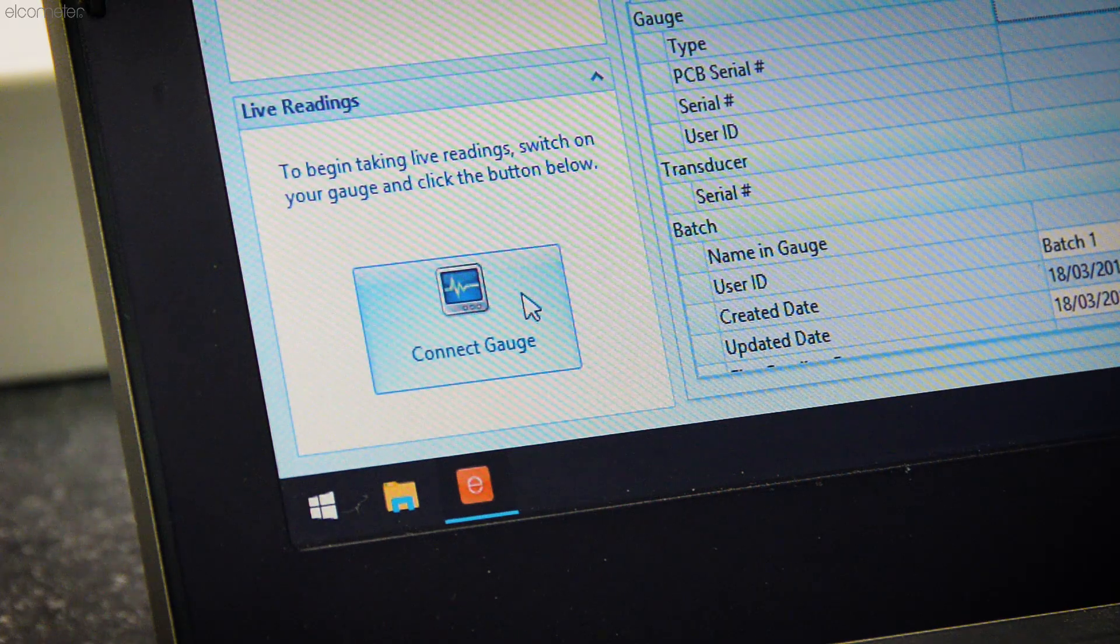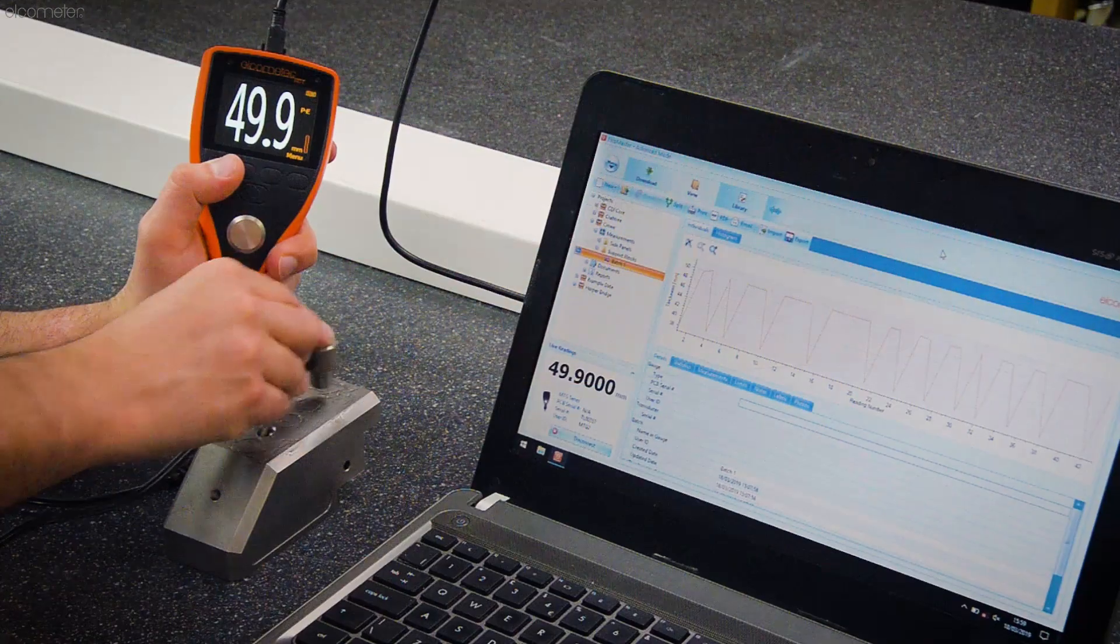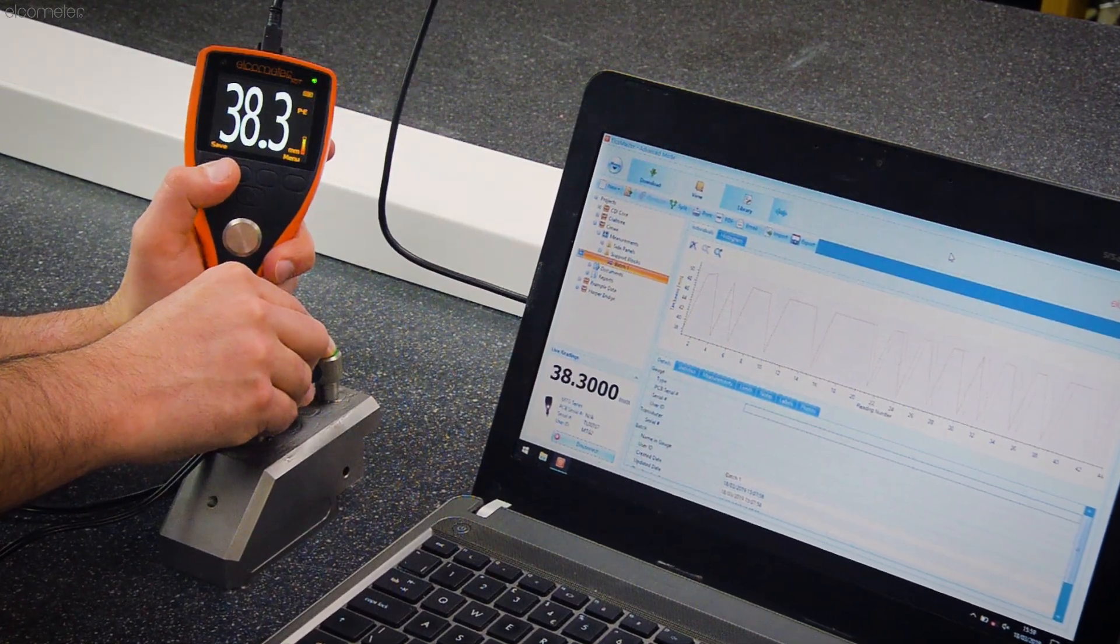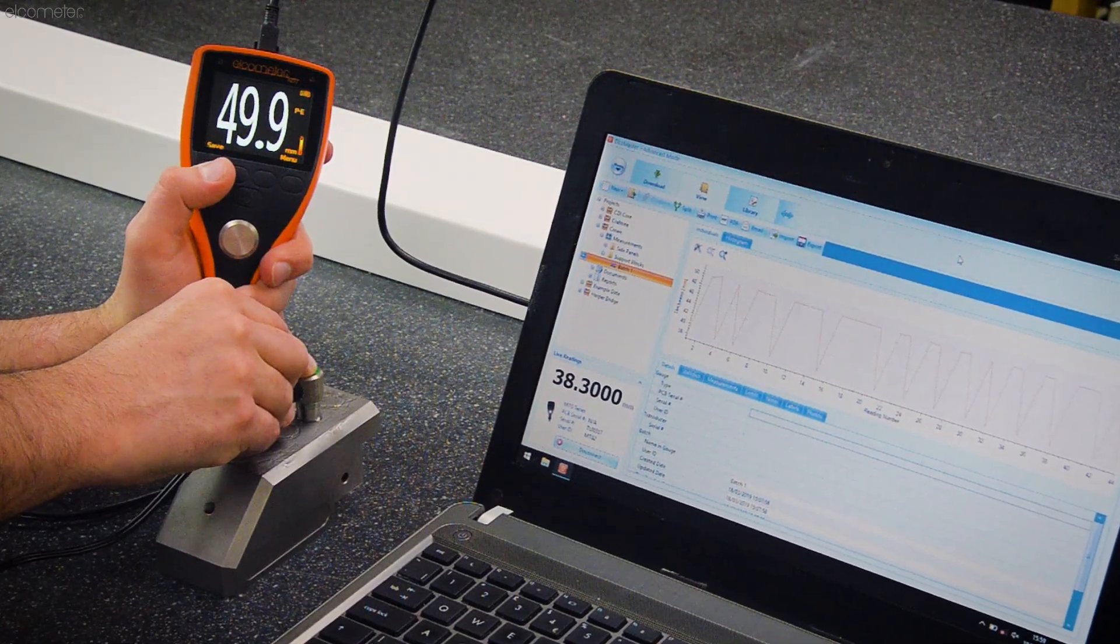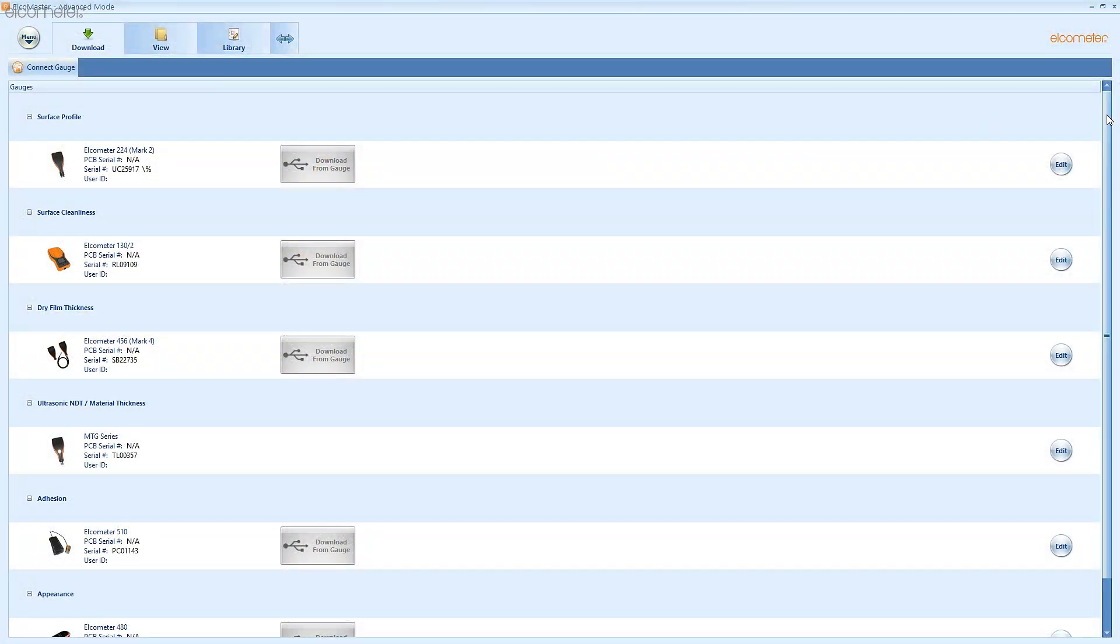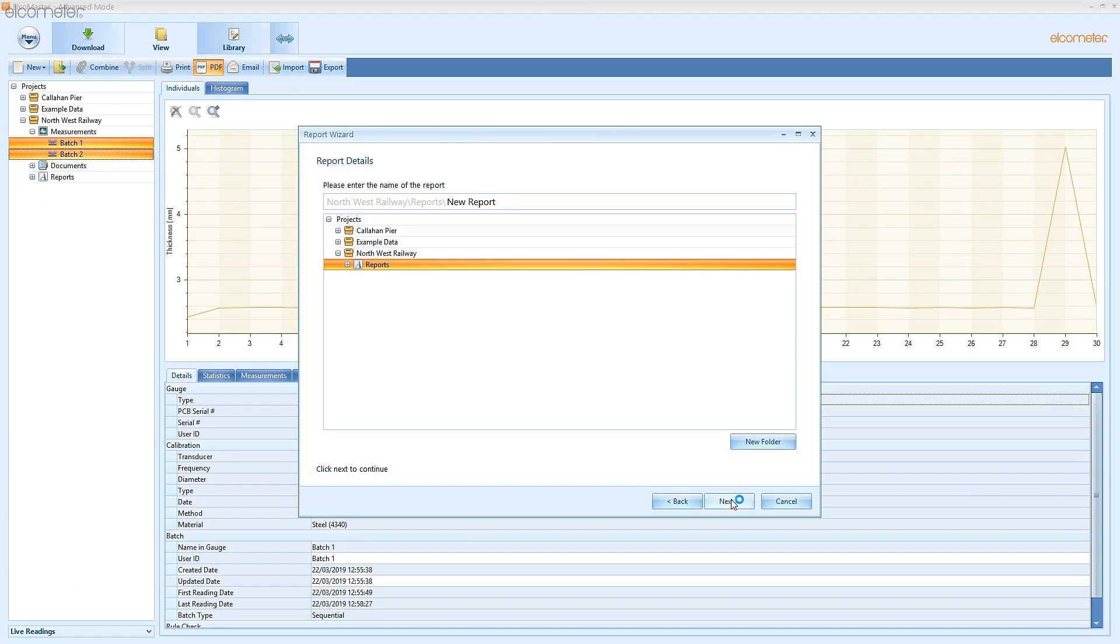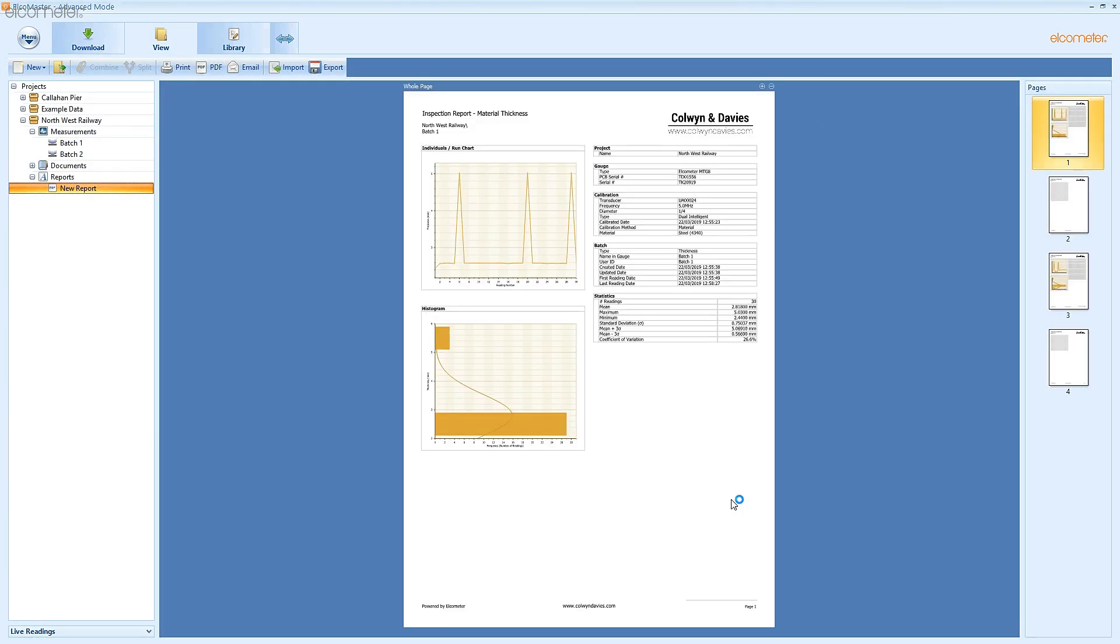You can connect the Elcometer MTG2 to a computer using a USB cable and transfer your readings live to ElcoMaster, Elcometer's free software for PC, along with all of your other inspection data, such as surface profile or surface cleanliness readings among others, to generate professional inspection reports instantly.